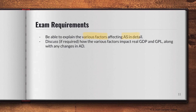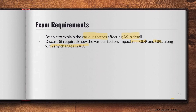For exam requirements, you need to be able to explain the various factors affecting AS in detail, and also discuss how these factors impact real GDP and GPL along with any changes in AD. The next video is where it all comes together — that's when we start understanding how the graphs work and how AD and AS work hand in hand. For this video, just understand that the quantity of factors of production, improvements in technology, and changes in cost of production due to raw materials or factor input costs are what affect AS in both the short run and the long run.